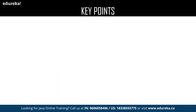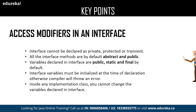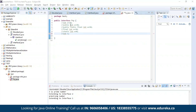Let us continue with key points. Regarding access modifiers in an interface — interfaces can be declared as private, protected, and transient. All interface methods by default are abstract and public. Variables declared in an interface are public, static, and final by default, and must be initialized at the time of declaration. Here I have defined an interface called try. Declaring an integer variable as 'int a = 10' is valid, and you can also use the public access modifier, or declare it as public static final — all of the above are valid.